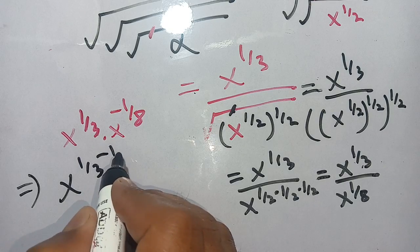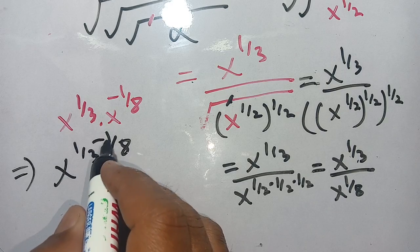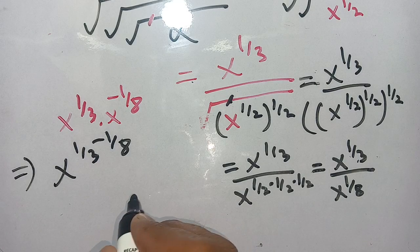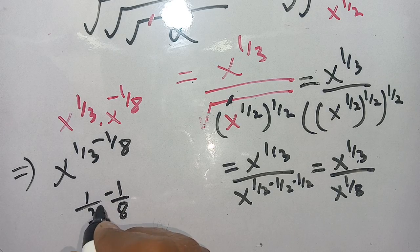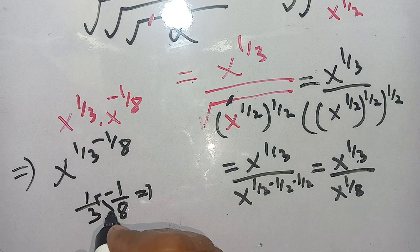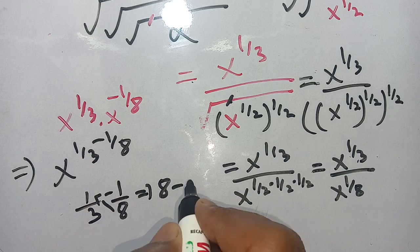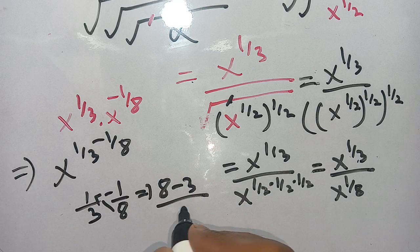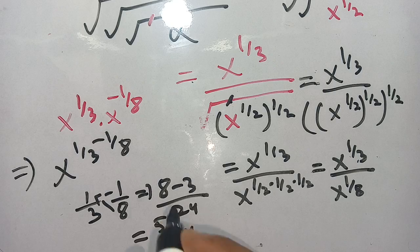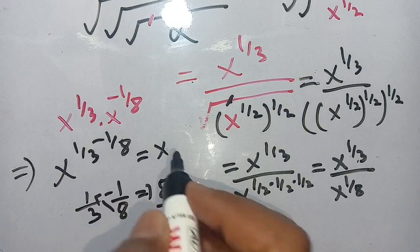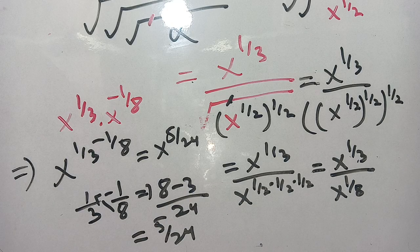We write this as x power 1 divided by 3 minus 1 divided by 8. Cross multiplying, we get 8 minus 3 divided by 24, which equals 5 divided by 24. So the result is x power 5 divided by 24.